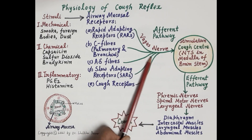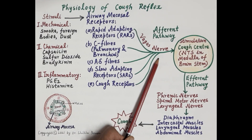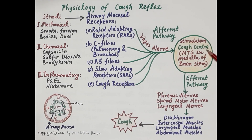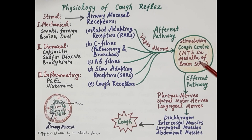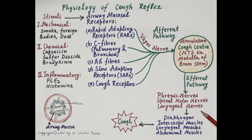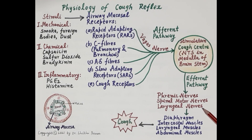Stimulation of these mucosal receptors stimulates the vagus nerve — the afferent or sensory pathway. The vagal nerve carries information about the presence of irritants in the respiratory mucosa to the brain, causing stimulation of the cough center located in the nucleus tractus solitarius (NTS), situated in the medulla, which is part of the brainstem. The cough center then stimulates the phrenic nerve, spinal motor nerves, and laryngeal nerves — the efferent or motor pathway.